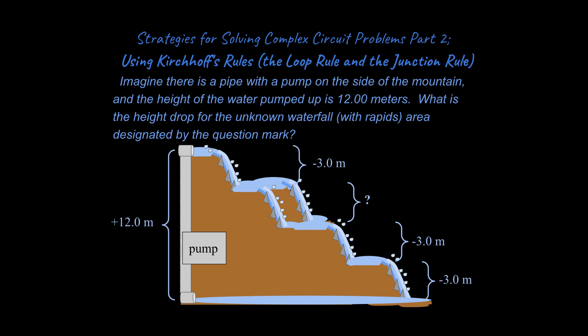So the first thing I want you to do is imagine that there's a pipe with a pump attached to it, and the height of the water is going to be pumped up to 12 meters. What is the height drop for the unknown waterfall with rapids area designated by the question mark? So take a look at this and think for a moment and anticipate what you think the answer is going to be here.